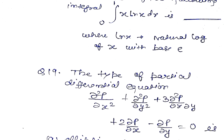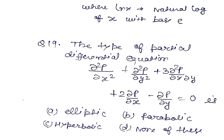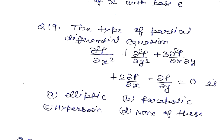Question number 19. The type of partial differential equation del 2p by del x square plus del 2p by del y square plus 3 del 2p by del x del y plus 2 del p by del x minus del p by del y equal to 0 is: elliptic, parabolic, hyperbolic, or none of these.